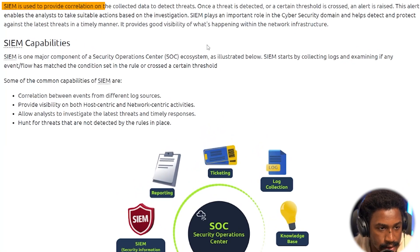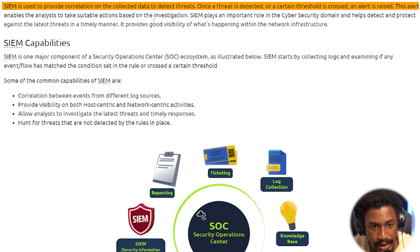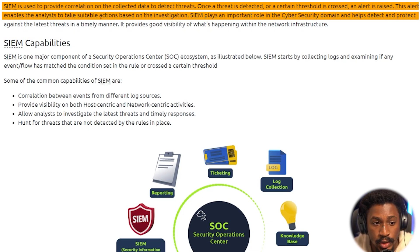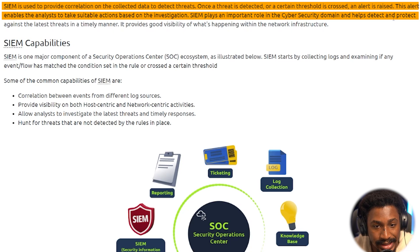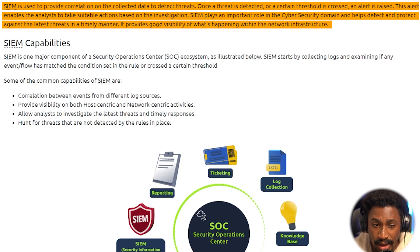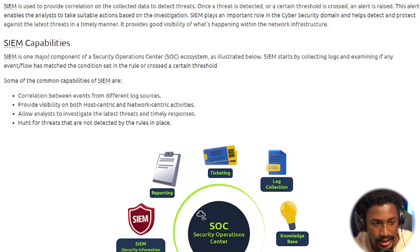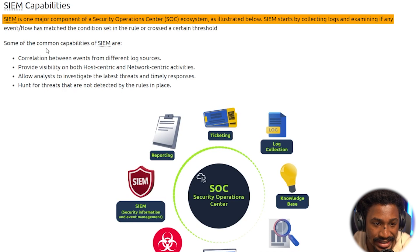A SIEM is used to provide correlation of collected data to detect threats. Once a threat is detected or a certain threshold is crossed, an alert is raised, enabling analysts to take suitable action based on the investigation. The SIEM plays an important role in the cybersecurity domain and helps detect and protect against the latest threats in a timely manner, providing good visibility of what's happening within the network infrastructure.